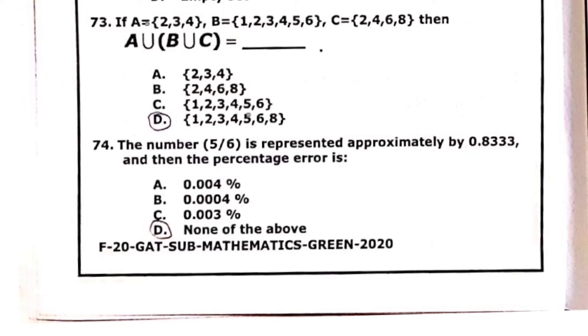74: the number 5 over 6 is represented approximately by 0.833. Basically there is no answer given in this.